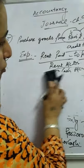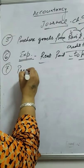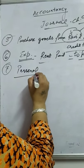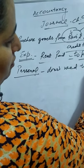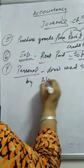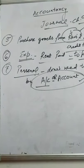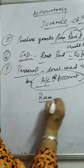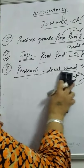One more rule is about personal accounts. When preparing a journal entry, personal accounts do not need to be followed by the word 'account.' For example, we can just write 'Ram' — there is no need to write 'Ram account.' After these rules, we will follow the three golden rules of journal entry.